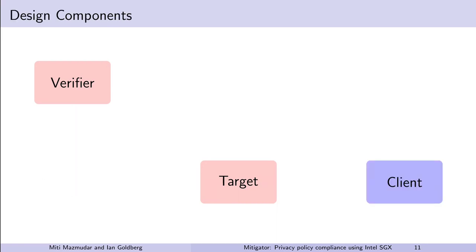Let's start with looking at the components of our design. I've described the verifier and target enclaves. Apart from the user's client, which is a browser extension, we also have a lightweight decryptor enclave. The verifier and decryptor enclaves are expected to be open-sourced so that experts can review the code of these components as well as for the client to authenticate the website as being compliant. However, the target enclave does not need to be open-sourced and may contain proprietary code.